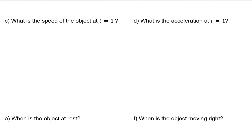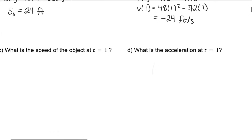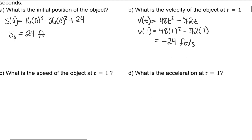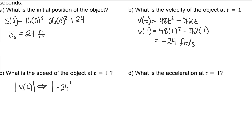What is the speed of the object at t equals 1? Remember, speed is the absolute value of velocity, so you just want to find the absolute value of v of 1. The absolute value of negative 24 is 24 — same units.